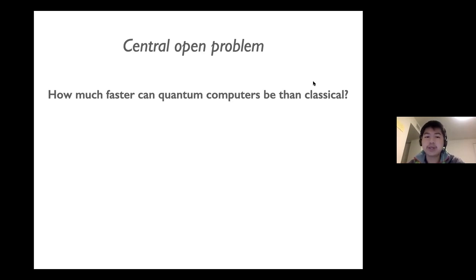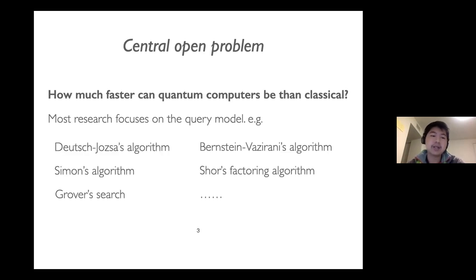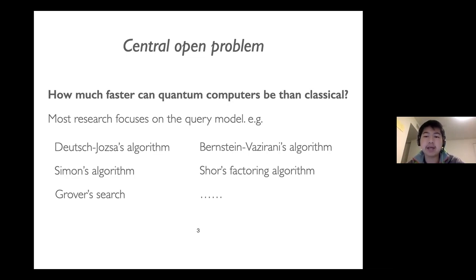Much of the research has focused on the query model. Here are a few very well-known algorithms captured by the query model, including the Deutsch-Jozsa algorithm, the Bernstein-Vazirani algorithm, et cetera, exhibiting significant quantum speedups.